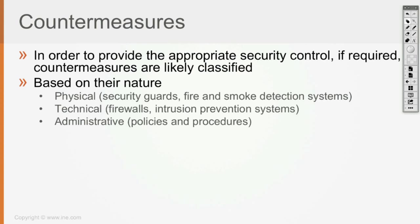In order to implement the proper countermeasures, we have to classify them. The classification of countermeasures is done based on a couple of inputs. It can be based on their nature — like we can have physical countermeasures such as security guards, which are going to ask people for identification before they get access to the company's offices.